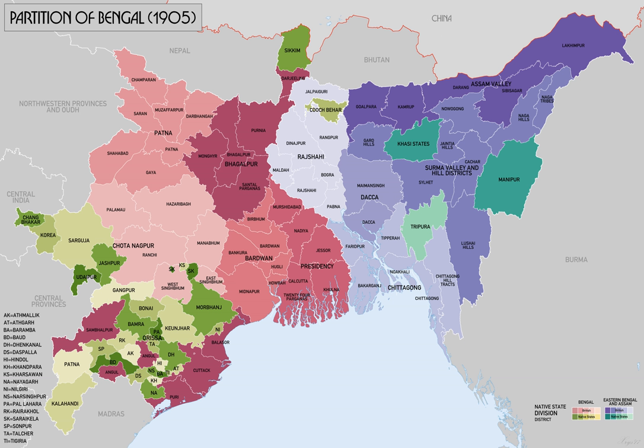Rabindranath Tagore wrote 'Banglar Mahdi Banglar Joel' as a rallying cry for proponents of annulment of the partition. Opposition to the partition was supported by Henry John Stedman Cotton, who had been Chief Commissioner of Assam, but Curzon was not to be moved. Later, Cotton, now Liberal MP for Nottingham East, coordinated the successful campaign to oust the first Lieutenant Governor of East Bengal, Sir Bamfild Fuller.